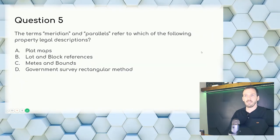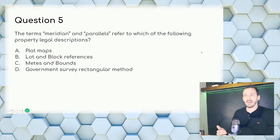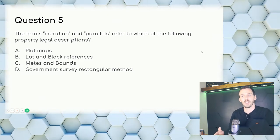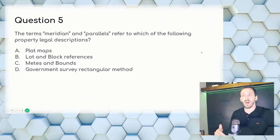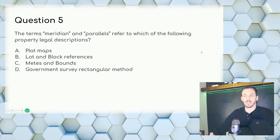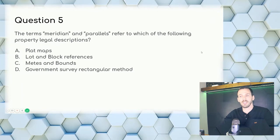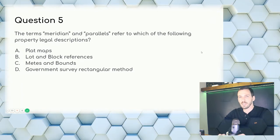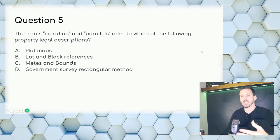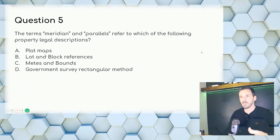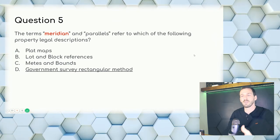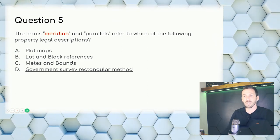Question 5: The terms meridian and parallels refer to which property legal description? Remember the grid lines — meridians are the vertical ones, baselines are horizontal, and parallels are another set of horizontal lines. Answer: D, the government survey rectangular method.